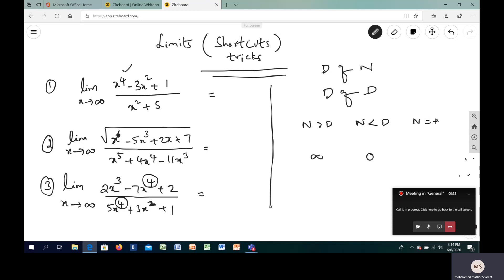What if your degree of a polynomial of numerator and denominator equals? Then you just have to note that we will take coefficient of highest degree of the numerator divided by the coefficient of the highest degree in the denominator. Isn't it simple?